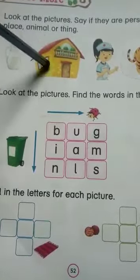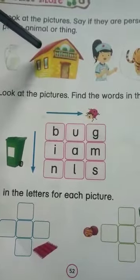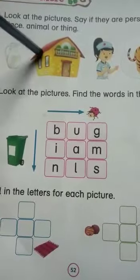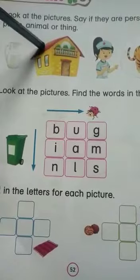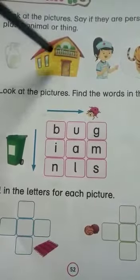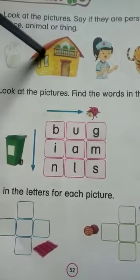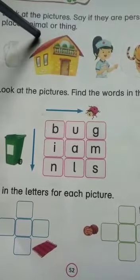Place means koi bhi jaga — any place. For example: a park, a hospital, a railway station, a fair — any place is a place.